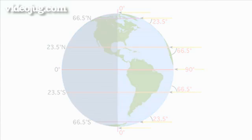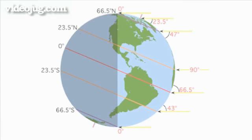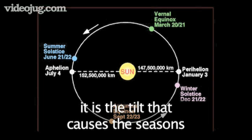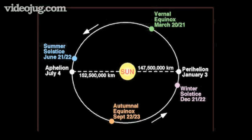But the Earth is not standing straight up. It is tilted slightly, about 23.5 degrees from true north and south. It's this tilt that causes the seasons and not the distance from the Earth to the sun.